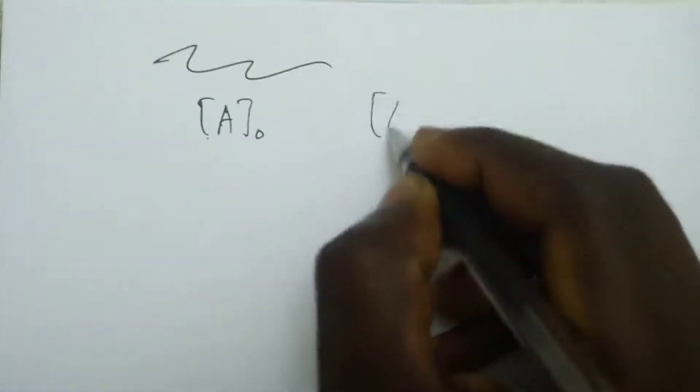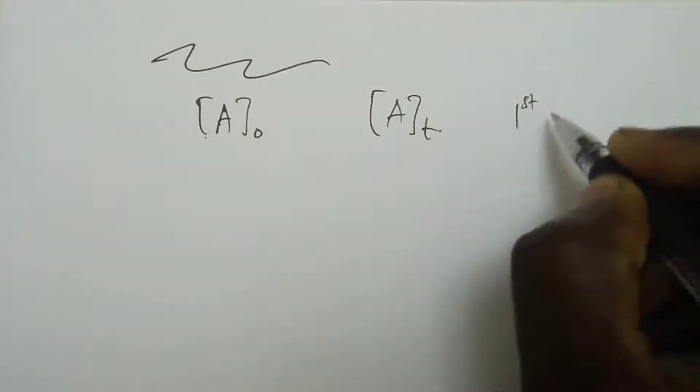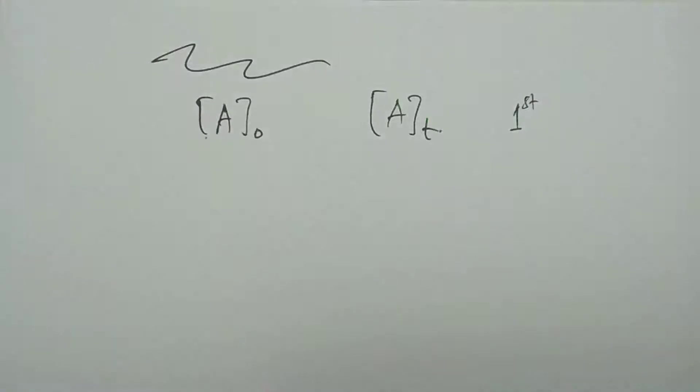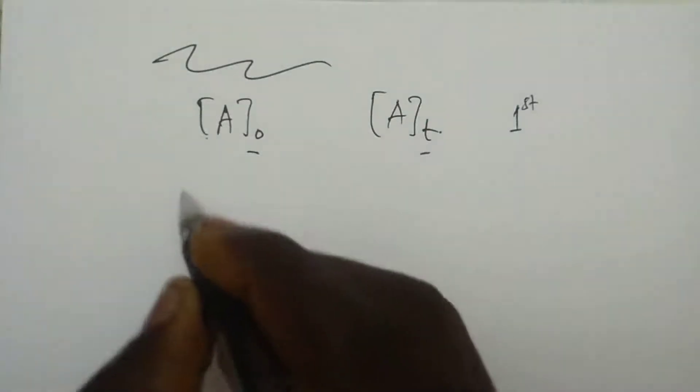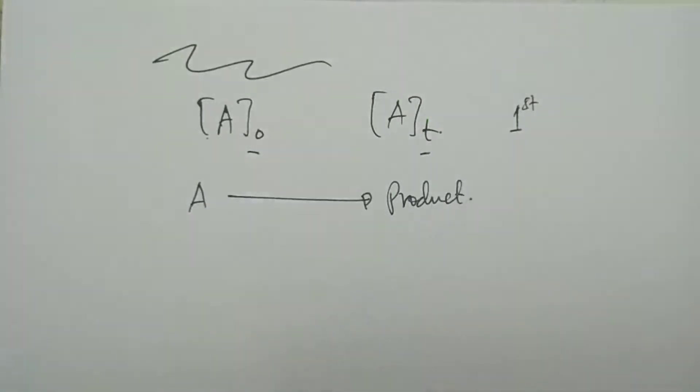Now, if you remember in the integrated rate equation, we had something we call concentration A₀, and we have something we call concentration Aₜ. So this has a lot of confusion, more especially in the first order integrated equation, the first order integrated equation for the rate of chemical reaction.